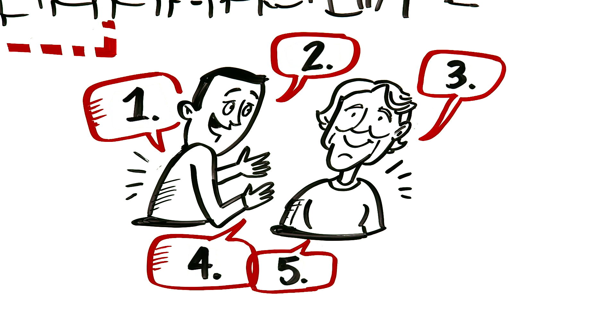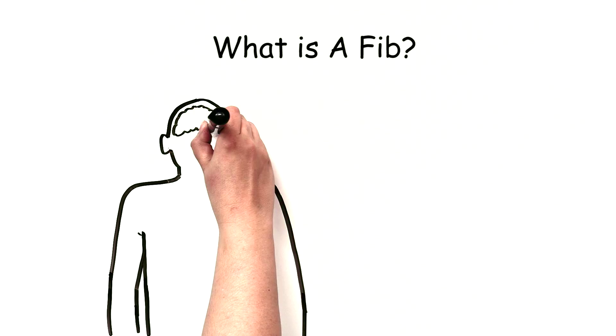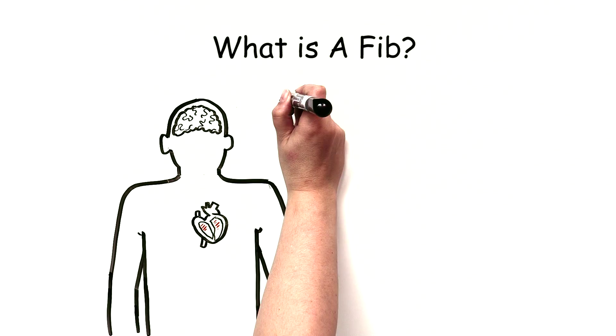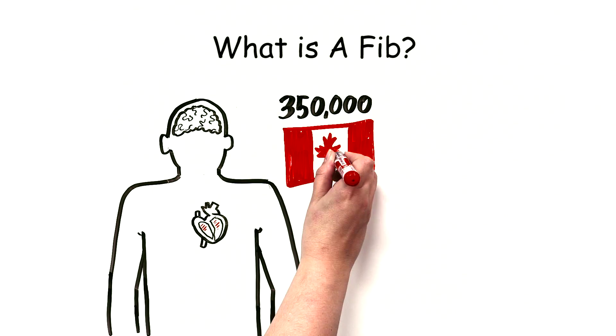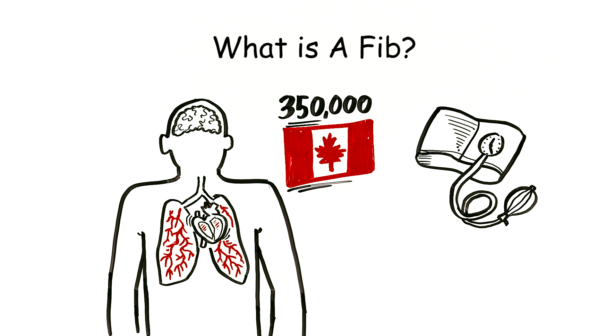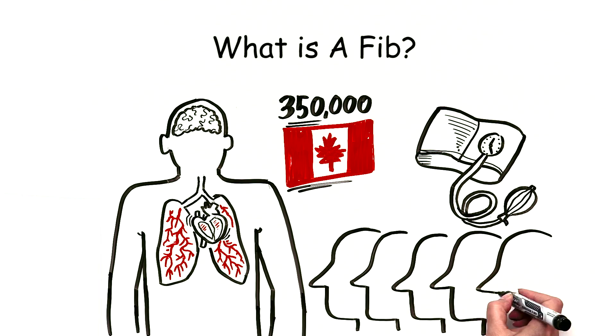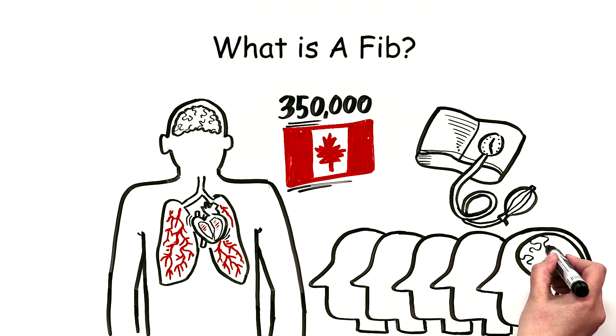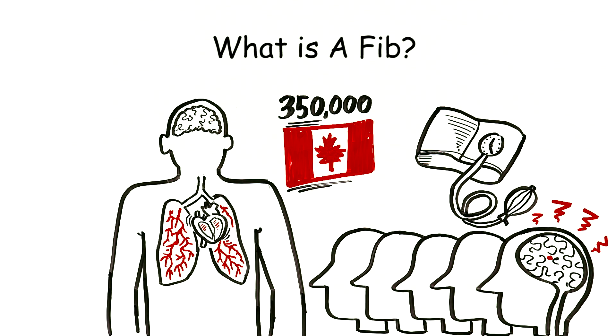There are a number of key points that should be addressed in our conversations with AFib patients. What is AFib? AFib is a common cardiac arrhythmia that affects over 350,000 Canadians. It is often seen in people with heart disease, lung disease, or high blood pressure. AFib increases the stroke risk five-fold and is responsible for 20% of all strokes.